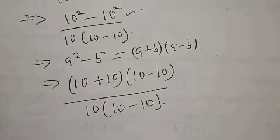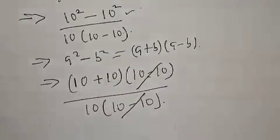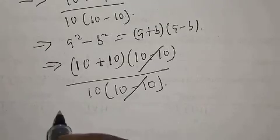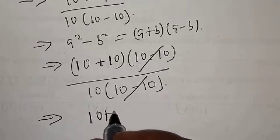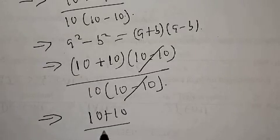Now let's cross this. This one will cancel with this. We are left with, this implies that we have 10 plus 10 over 10.